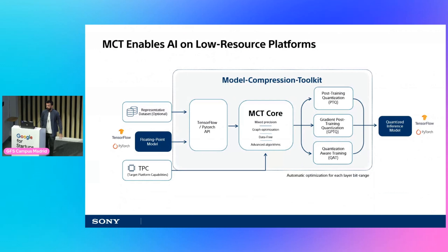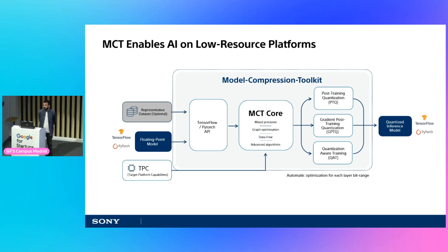What we see right here is a high-level diagram of MCT. MCT takes a model from the framework and keeps it in the framework on the output, so you can utilize it regardless of edge deployment, and you can validate the accuracy on the hardware directly on the framework. MCT either gets a representative dataset as input or it generates one based on the model's weight distribution, yielding similar or close enough results — mainly for cases where privacy or confidentiality is a restriction or when a dataset is not at hand. The representative dataset is optional due to our latest research paper that allows for zero-shot quantization without any dataset.